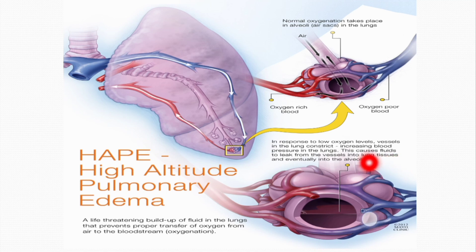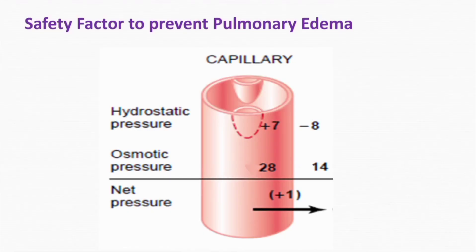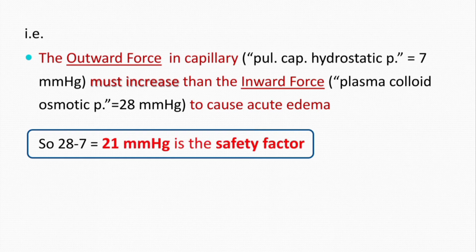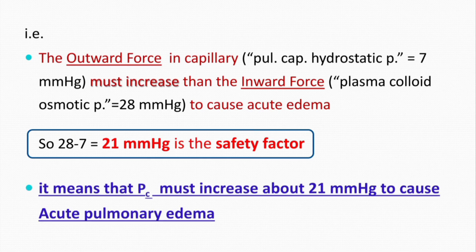Regarding the safety factor against pulmonary edema: experiments in animals have shown that pulmonary capillary pressure must rise to at least equal the plasma colloid osmotic pressure before pulmonary edema can occur. The pulmonary capillary hydrostatic pressure of 7 mmHg must increase to exceed the plasma colloid osmotic pressure of 28 mmHg to cause acute edema. Therefore, 28 minus 7 equals 21 mmHg is the safety factor — meaning capillary hydrostatic pressure must increase about 21 mmHg to cause acute pulmonary edema.